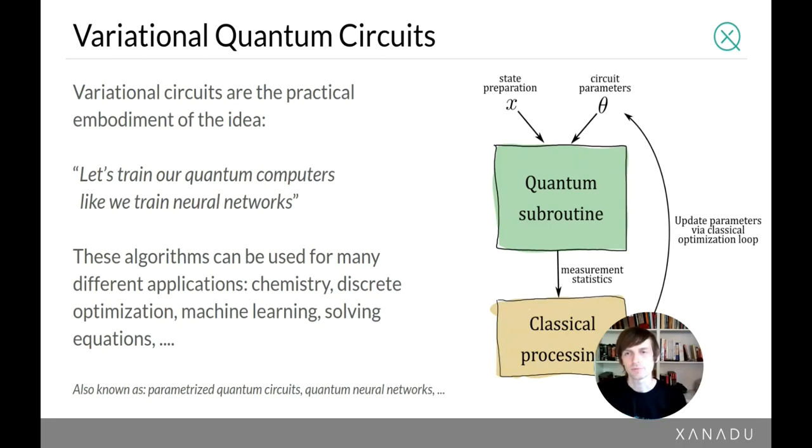The basic way a variational quantum circuit works is that there is some quantum circuit that forms the basic subroutine of a larger algorithm. The quantum subroutine takes in the state preparation or input data x and circuit parameters theta, then outputs measurement statistics. These measurement statistics go through classical processing and you use some optimizer to update the parameters in an outer classical optimization loop.